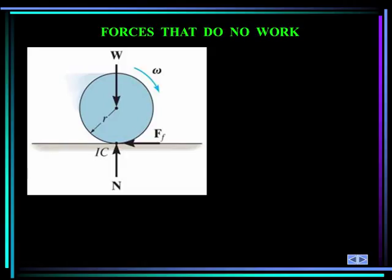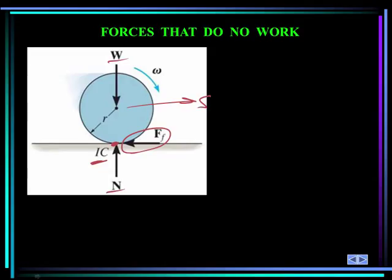Some external forces do no work. Reactions at supports do no work because the displacement at the point of application is zero. For a disk rolling without slip, the contact point is the instantaneous center and is not moving, so the frictional force does no work. The normal force and the weight also do no work because they are perpendicular to the displacement vector.